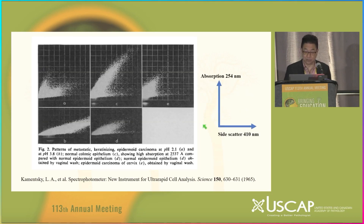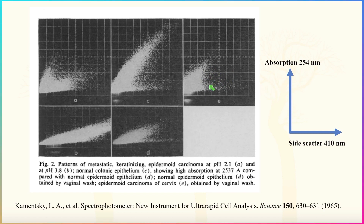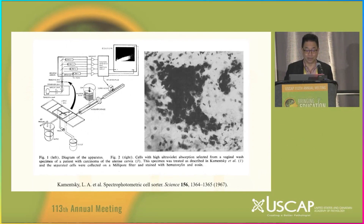Just looking at the absorption versus the side scatter, you can get a very good idea of what cells look like. In A and B, these are examples of an epidermoid carcinoma. Here you see normal colonic epithelium, and here is normal epidermoid epithelium. This is an example of an epidermoid carcinoma obtained by vaginal wash, where the high absorption at 254 gives an indication of more DNA. He then went on to create essentially one of the first cell sorters.